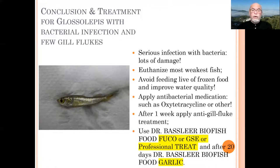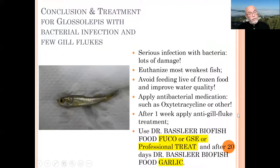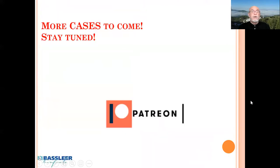As food, we recommend Dr. Basslier Biofish Food Fuco to help control the bacterial infection and for repair of the fish. Apply grapefruit seed extract in the Biofish Food or the professional treat, which is also very helpful in the repair of the fish and to develop a better immune system. After 20 days, try to feed with Dr. Basslier Biofish Food Garlic, which is very good in the control of parasitic infections like gill fluke. A combination of food and medication can be a good help for your fish care.